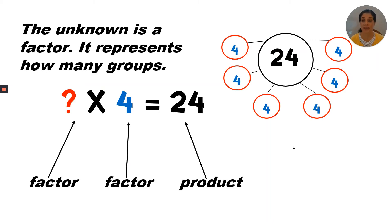Six is a factor. It represents how many groups. So we have six groups of four.